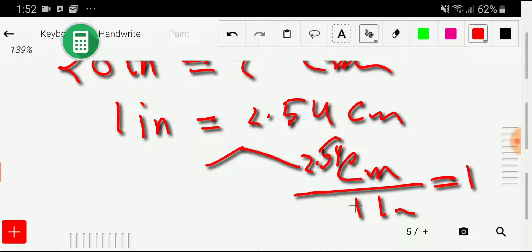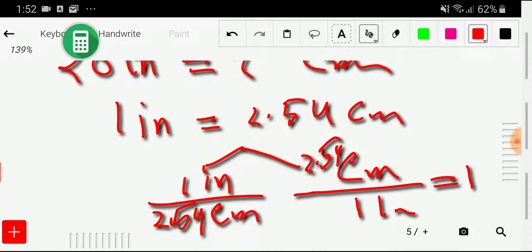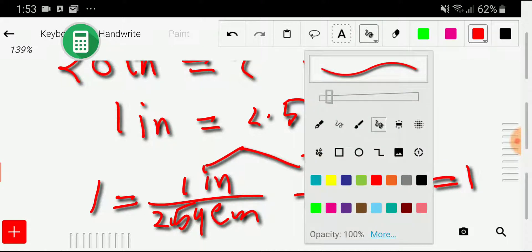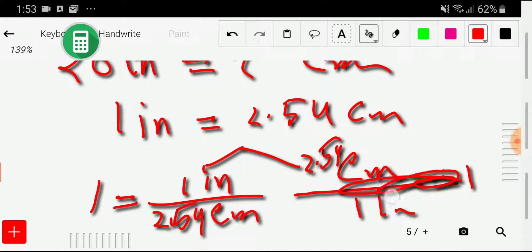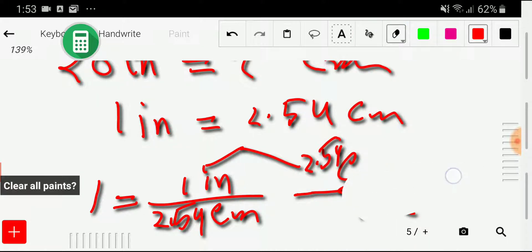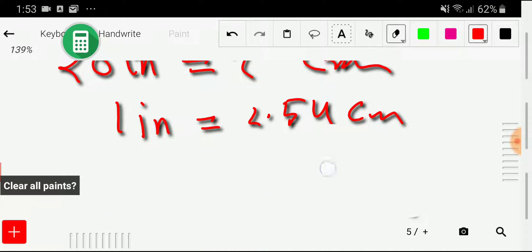But if you take the opposite of this conversion factor—that is, inch as the numerator and centimeter as the denominator—you're getting this. Actually, you don't need to memorize this conversion factor. You only need to memorize the equivalence, because the conversion factor will come to our calculation automatically. I will show you.